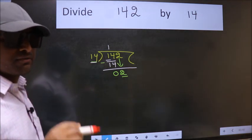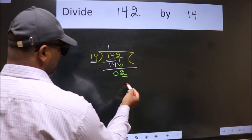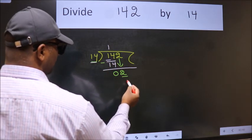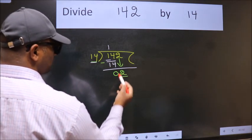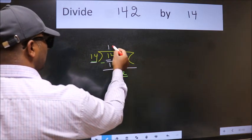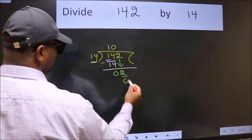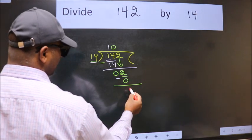Instead of that what we should think of doing is which number should we take here. If I take 1 we will get 14. But 14 is larger than 2. So what we do is we take 0 here. So 14 into 0, 0. Now we subtract. We get 2.